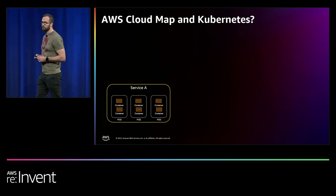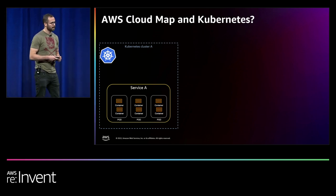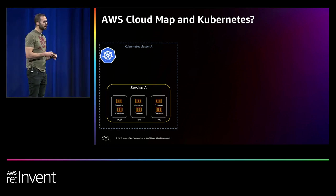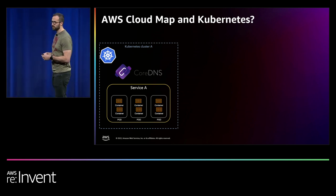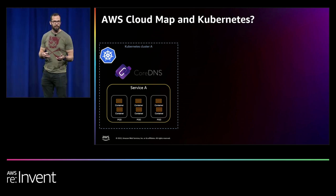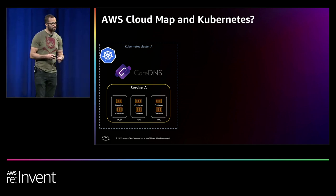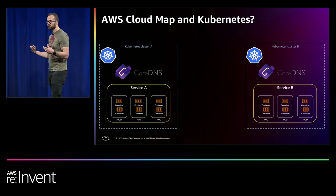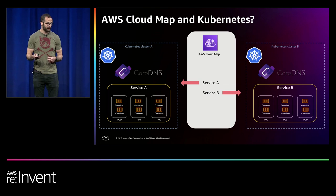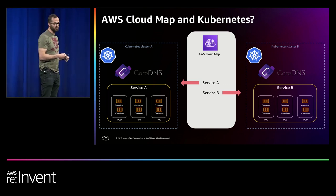How does AWS Cloud Map fit with Kubernetes environments? In a Kubernetes cluster, there's built-in service discovery using DNS — for example, CoreDNS — and services within the same cluster use it to find each other, so you don't really need Cloud Map in that scenario. Where Cloud Map really helps is when you have two clusters and each only knows about services within its own cluster. You can use Cloud Map to share information between those two clusters and help them communicate, so Service A can discover Service B and vice versa.